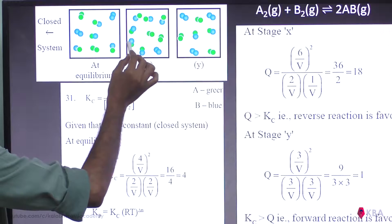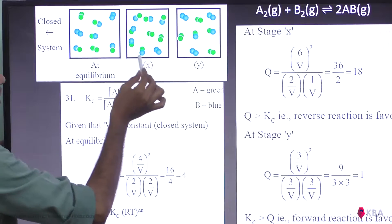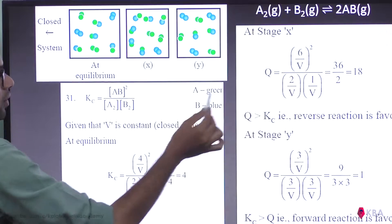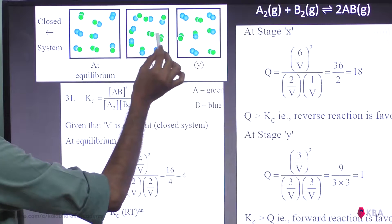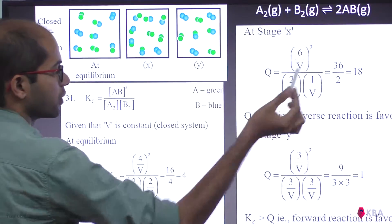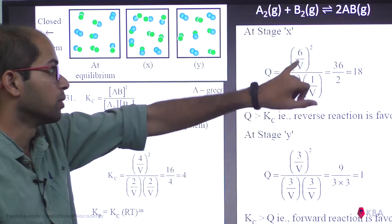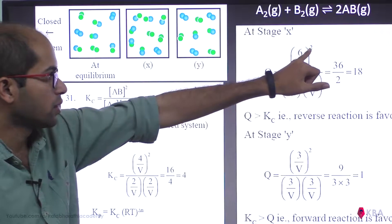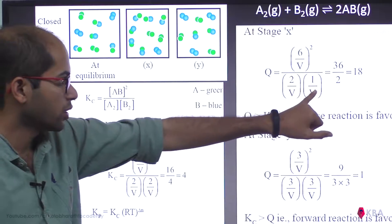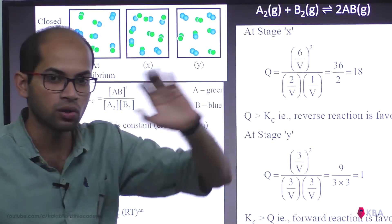Counting AB molecules in scene X: 1, 2, 3, 4, 5, 6 — so AB = 6, giving 6 by V. Green (A2) = 2 by V. Blue (B2) = 1 by V. So Q = (6/V)² divided by (2/V × 1/V) = 36 by V square divided by 2 by V square. V square cancels. 36 divided by 2 equals 18.